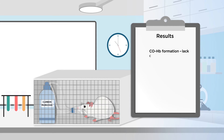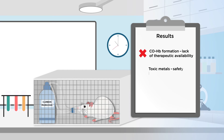Inhaled carbon monoxide binds to hemoglobin in the body, leaving very little free carbon monoxide available to act pharmacologically. The same is true for systemically administered carbon monoxide-releasing molecules, which also contain toxic transition metals, raising safety concerns.